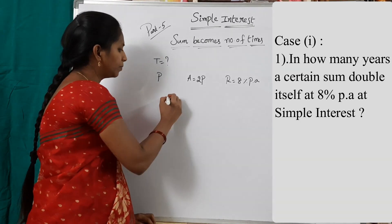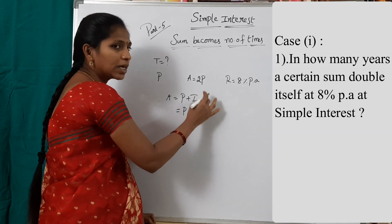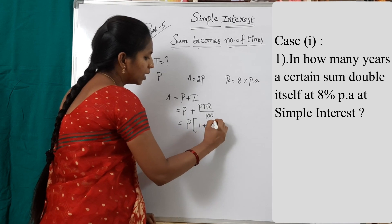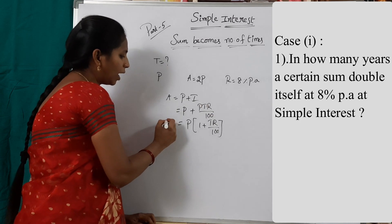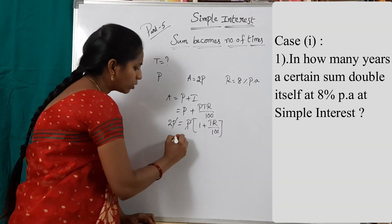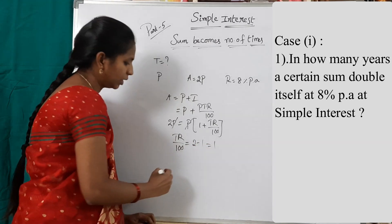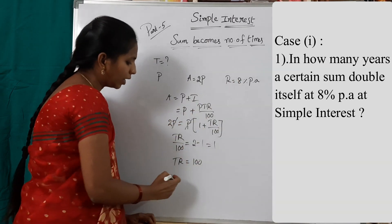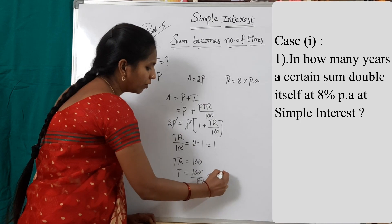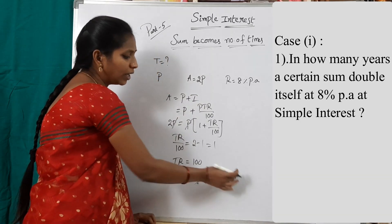The formula for amount is A = P + I, where I is simple interest = PTR/100. So A = P(1 + TR/100). Since A = 2P, we get 2P = P × (1 + TR/100). P cancels, giving TR/100 = 1, so TR = 100. With R = 8, T = 100/8 = 12.5 years. This is the traditional method.